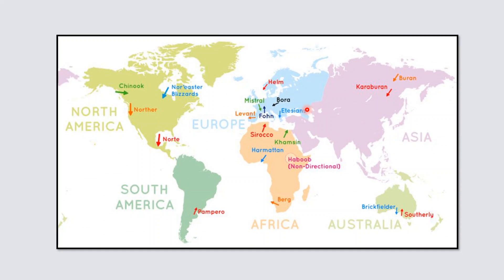Local winds like the fohn and chinook are hot local winds. The mistral and bora are cold local winds. The loo, which blows in parts of the Gangetic Plain during summer, comes from Rajasthan, blows over western Uttar Pradesh in India, and has a marked effect on the temperature of the areas over which it blows.